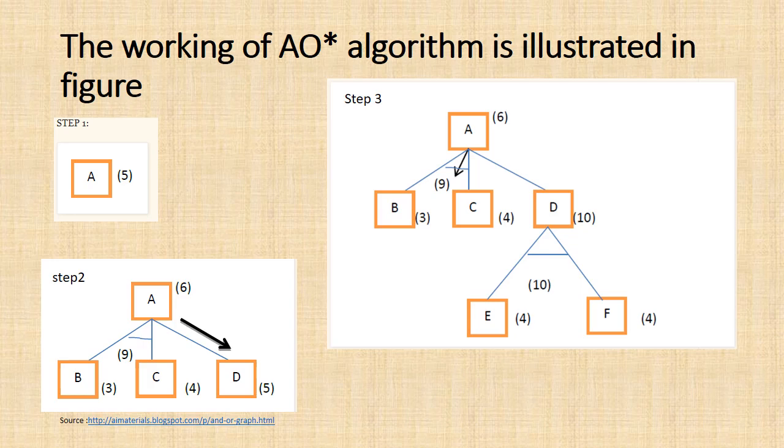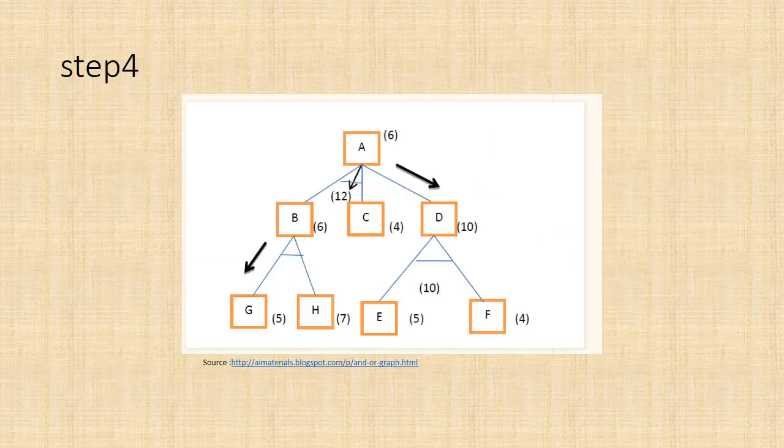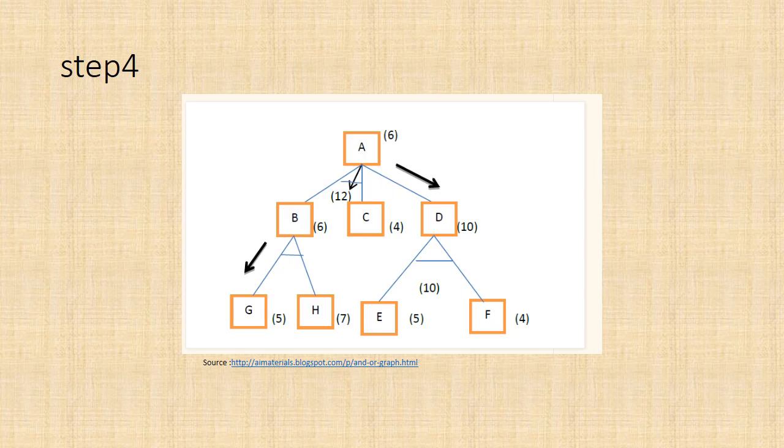This process produces one new arc, the AND arc to E and F, with a combined cost estimate of 10. So we update the f value of D to 10. Going back one more level, we see that this makes the AND arc B-C better than the arc to D, so it is labeled as the current best path. We traverse the arc from A and discover the unexpanded nodes B and C. If we're going to find a solution along this path, we will have to expand both B and C eventually, so let's choose to explore B first.